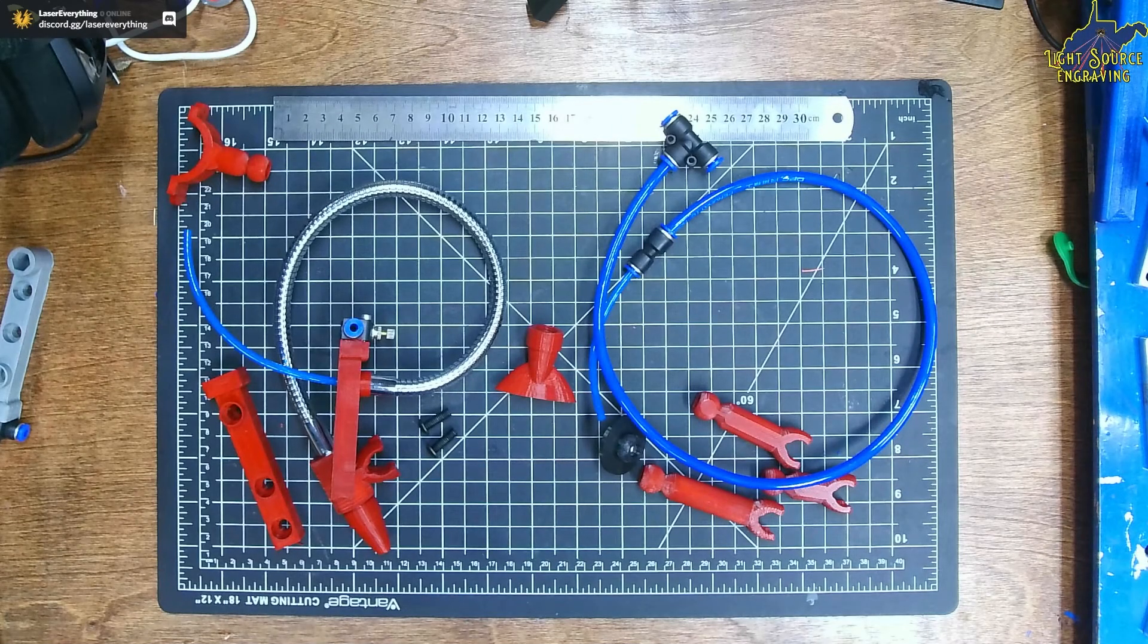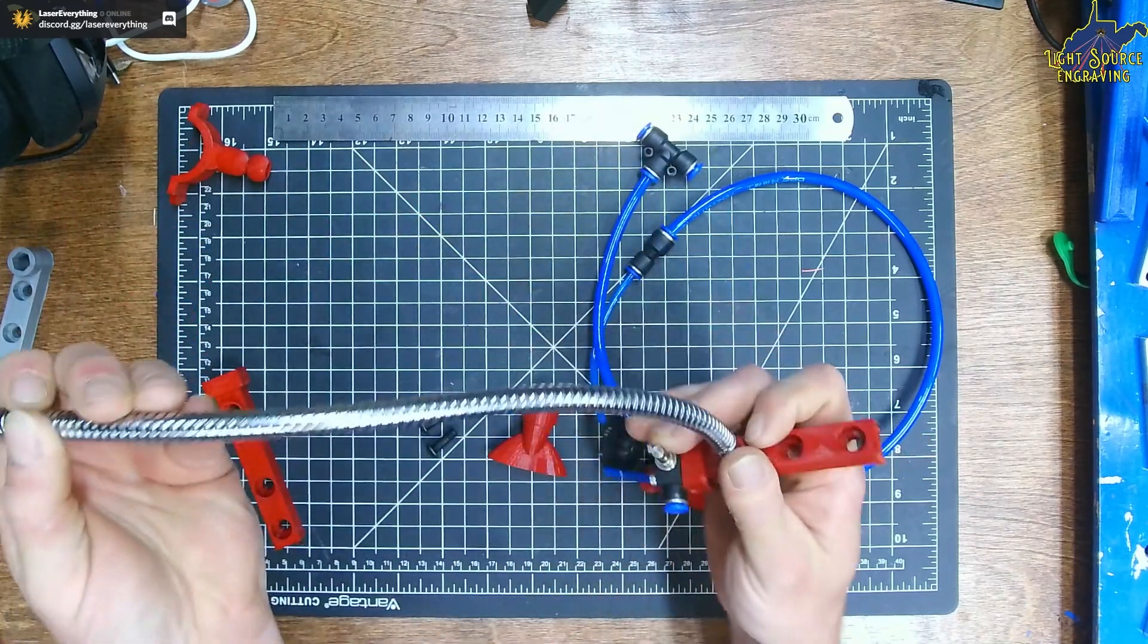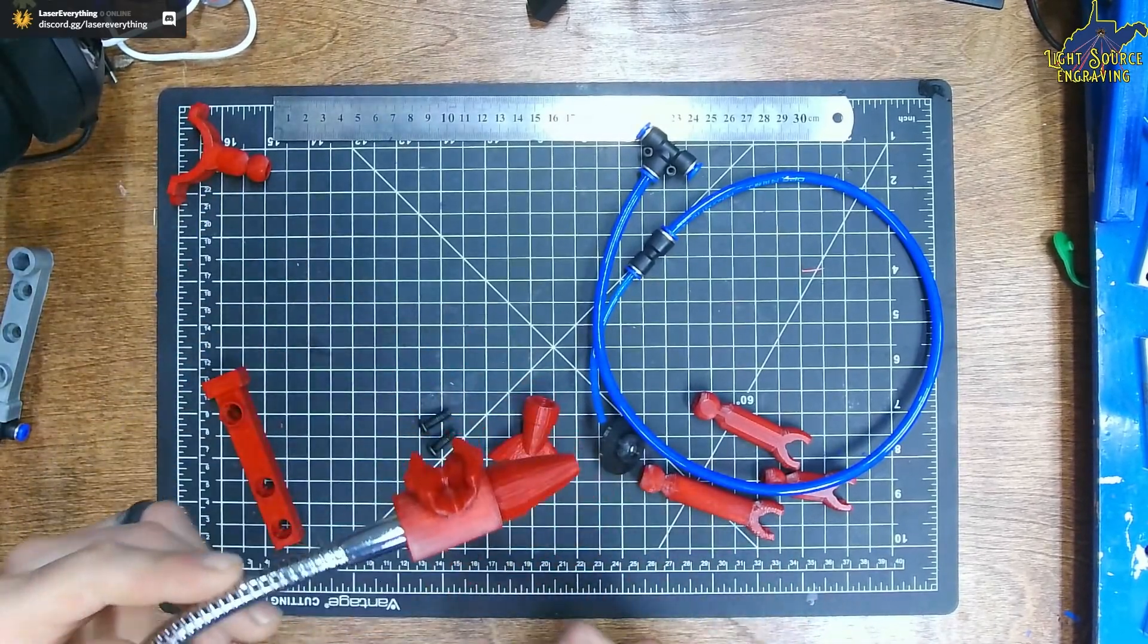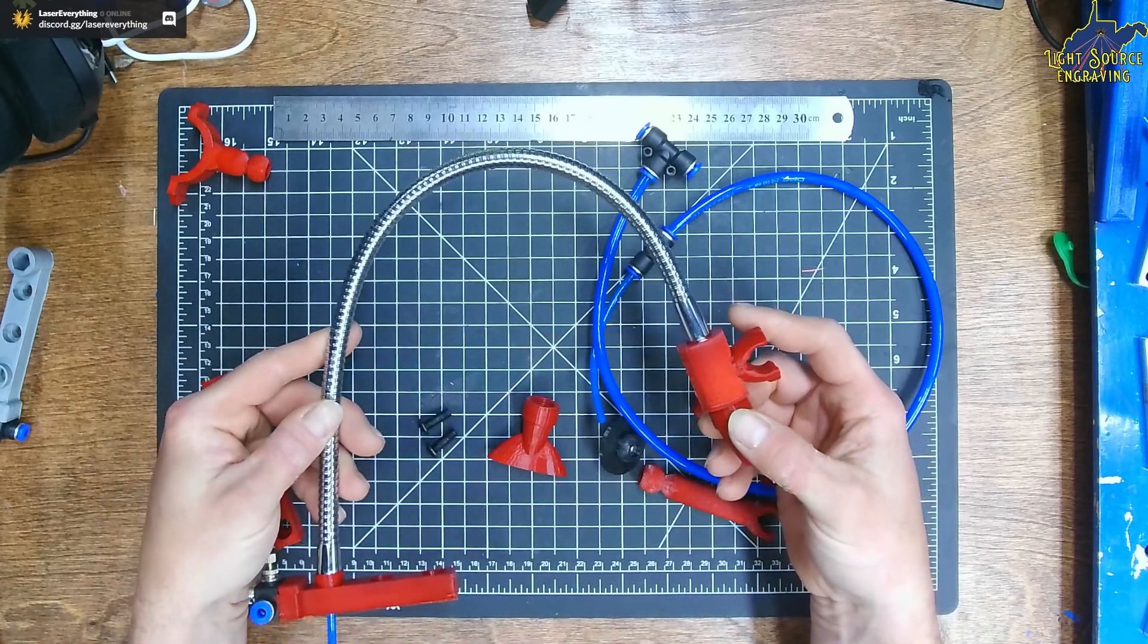To begin the final assembly process, simply unwind the gooseneck and orient it so that the ball and socket joint at the top of the coupler is now on the top as the air assist unit would sit on your breadboard.